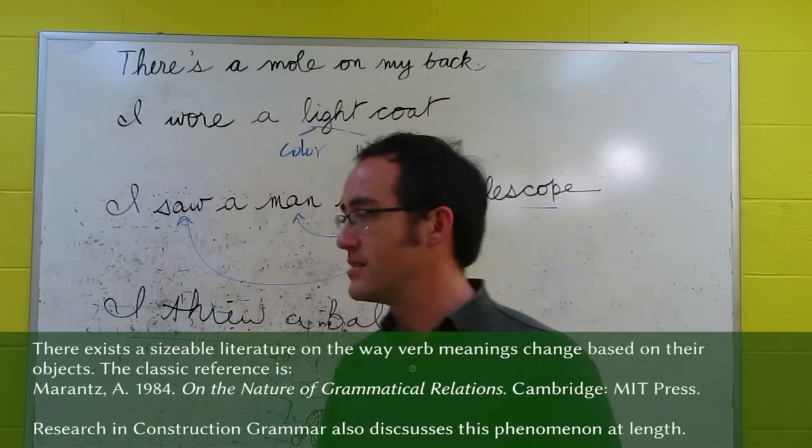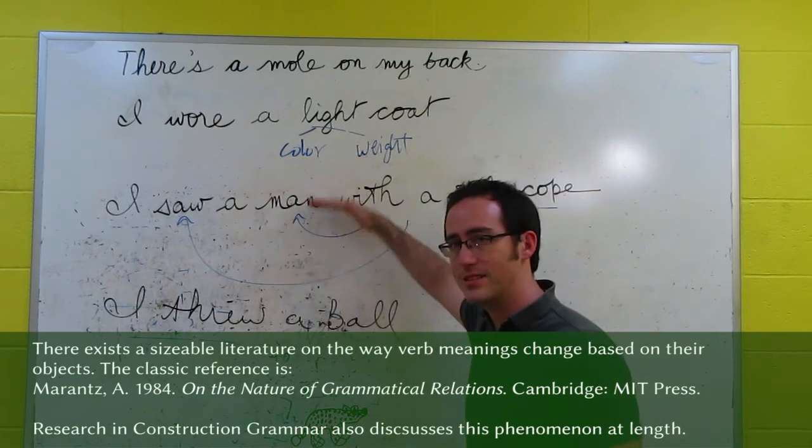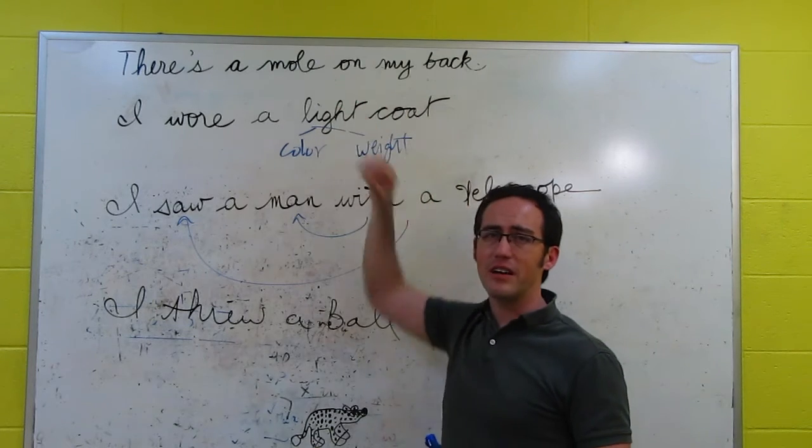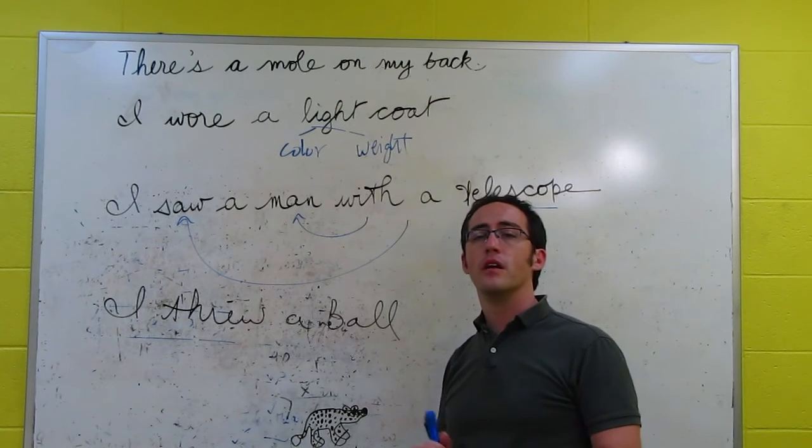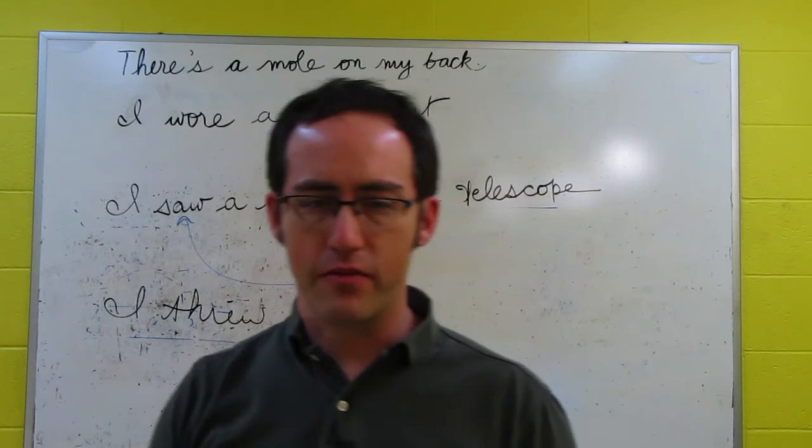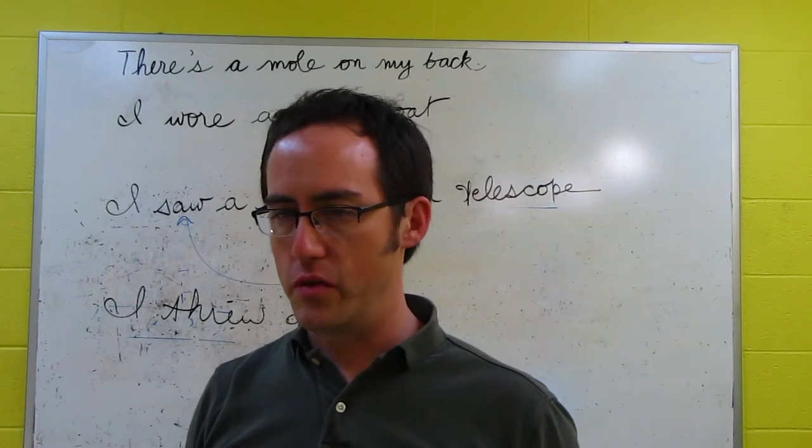So, there are a lot of different kinds of ambiguities. And some of them depend on the syntax in a lot of ways. And some of them are really lexical in nature. And in that sense, we get different kinds of ambiguity.